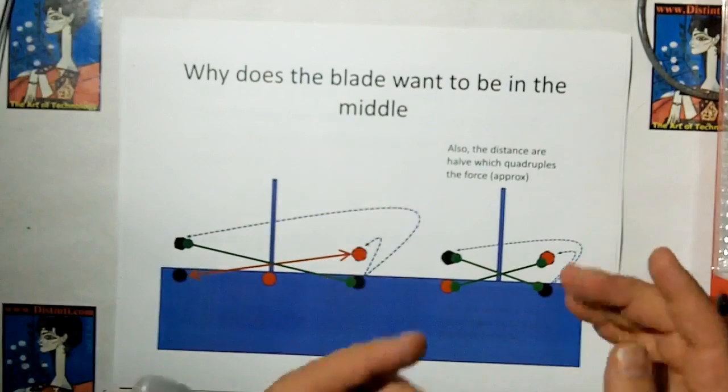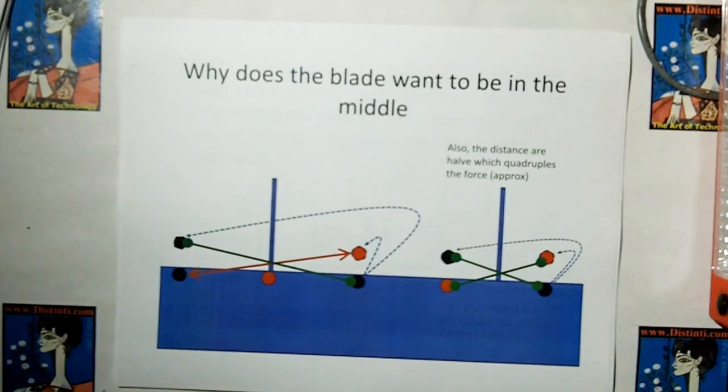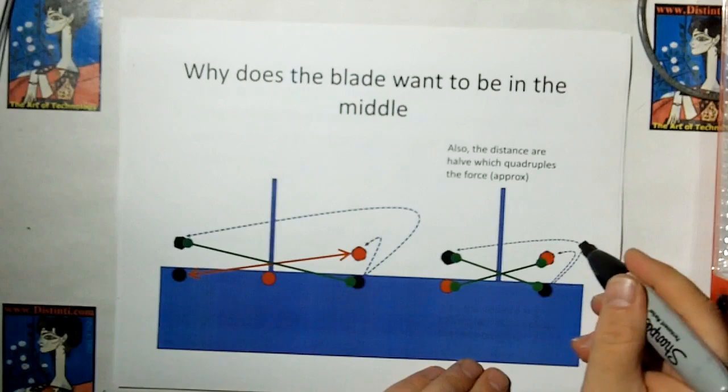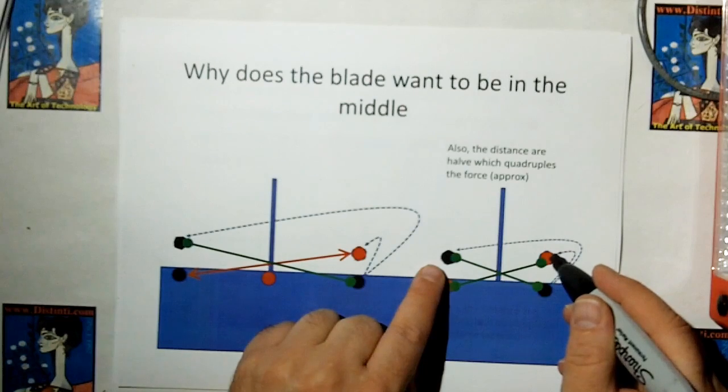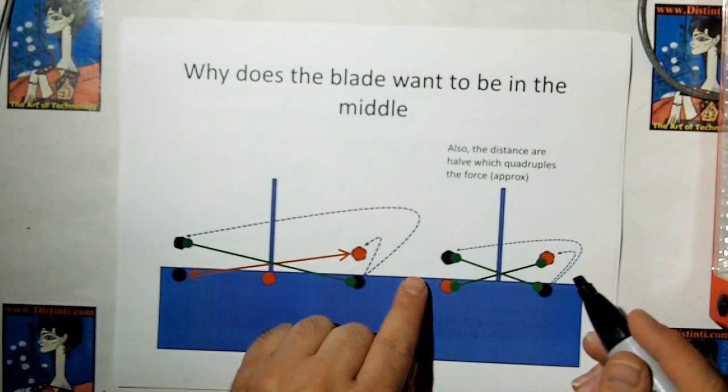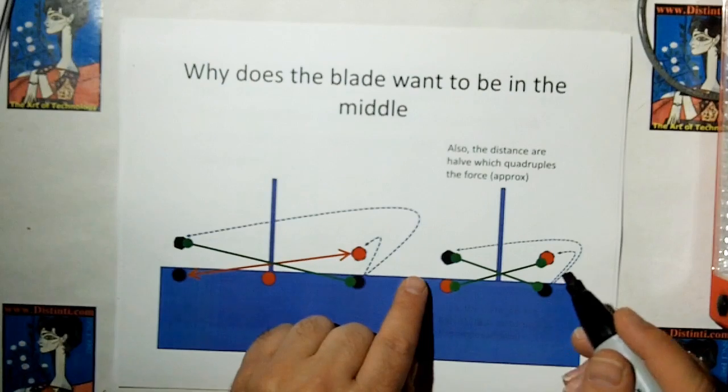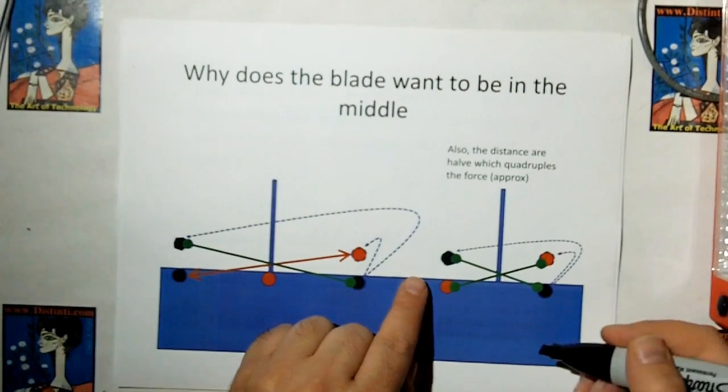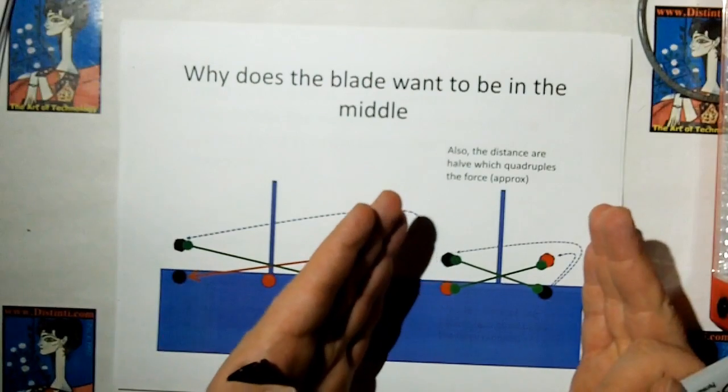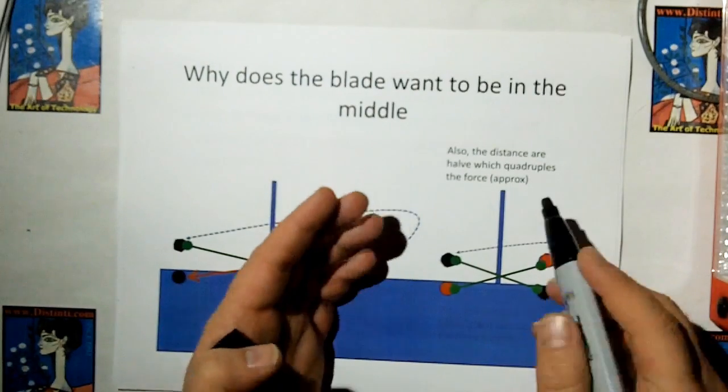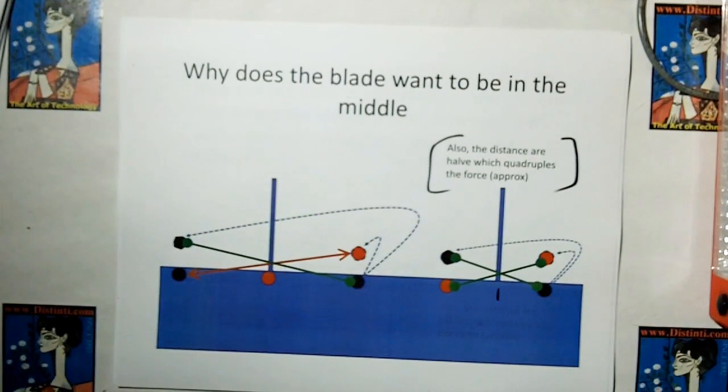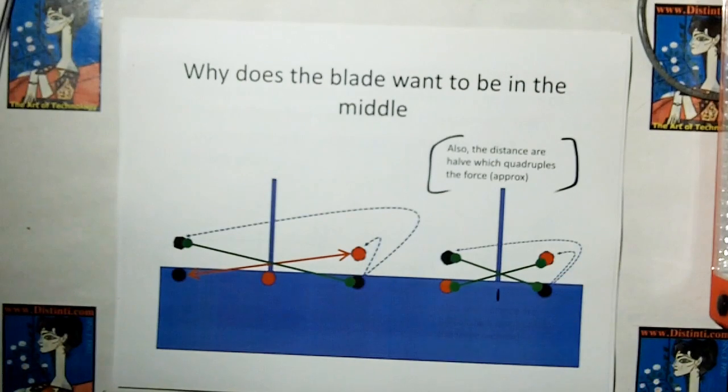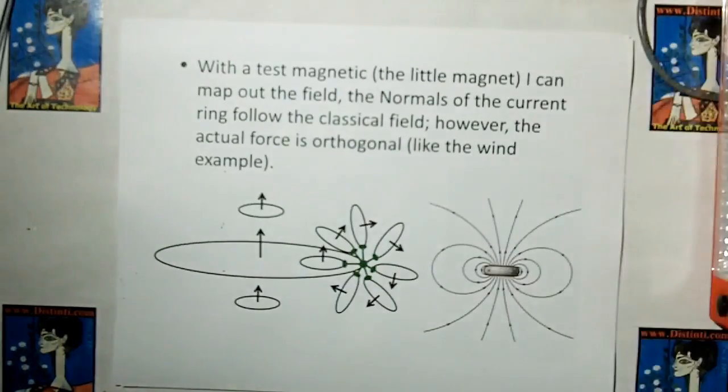And your distances are going to be twice as far as this, where if the blade is in the middle, this guy is going to create a positive image of itself on the back side, which is going to be attractive. And it's going to create a negative image on this side, which is going to be attractive to this guy, because they're the same. And so you're going to get double attraction here, plus it's half the distance, so it's going to be four times the force. So this is the strongest point of attraction for the blade. And that's why the blade wants to go between the current rings, or the edge currents, rather.